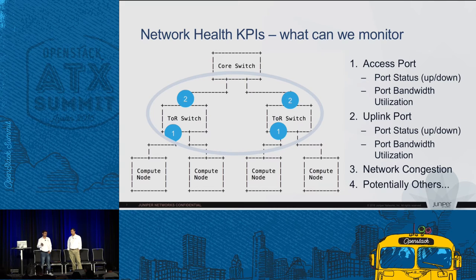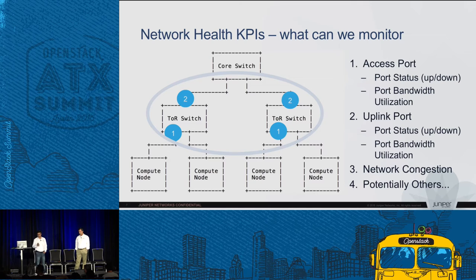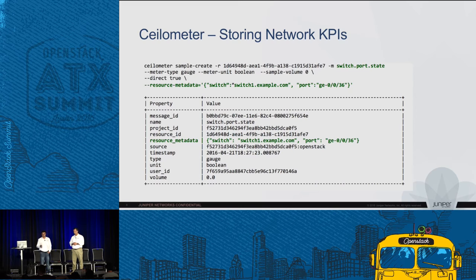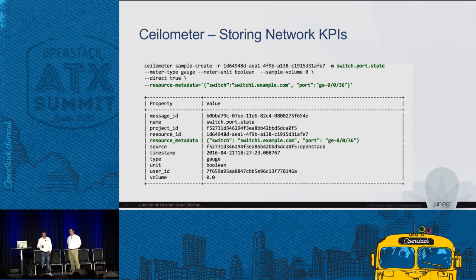Various other network characteristics inherent to a physical network — like network transitions and the paths to reach the core switch — will also impact this decision. These are the KPIs we would like to collect about the network and provide to Nova so it can make a good decision about where to place the VM. For the use case, we have defined a generic meter called switch_port_state, and the resource metadata field captures the exact characteristics of the instance, such as the switch port details passed as resource metadata.